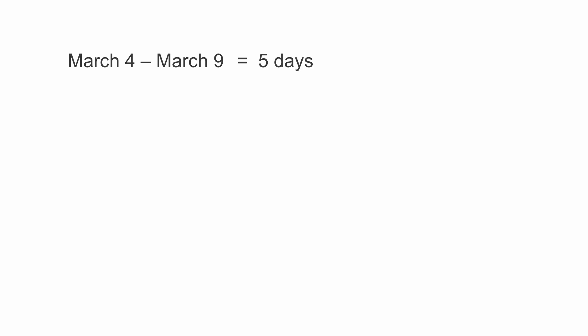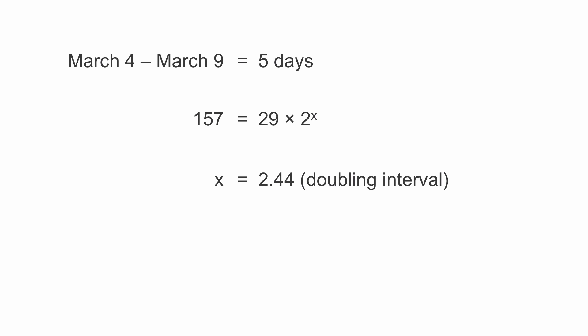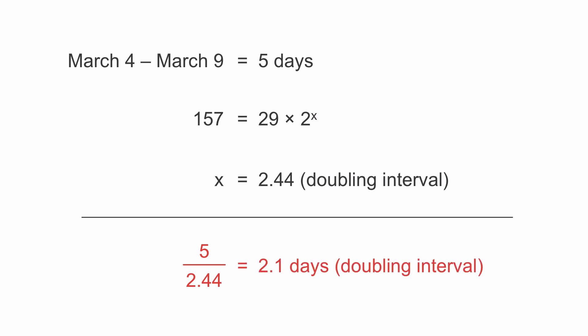What's the situation here? In Austria, we had 29 cases on March 4th and 157 cases on March 9th. Let's calculate the doubling time. March 4th to March 9th is five days. So 29, the number on March 4th, times 2 to the power of x, where x is the number of doubling intervals. Solving for x gives us 2.44 doubling intervals. So there are 2.44 doubling intervals in these five days. To calculate the doubling time, we divide five by 2.44, which equals 2.1 days — that's the doubling interval in Austria.